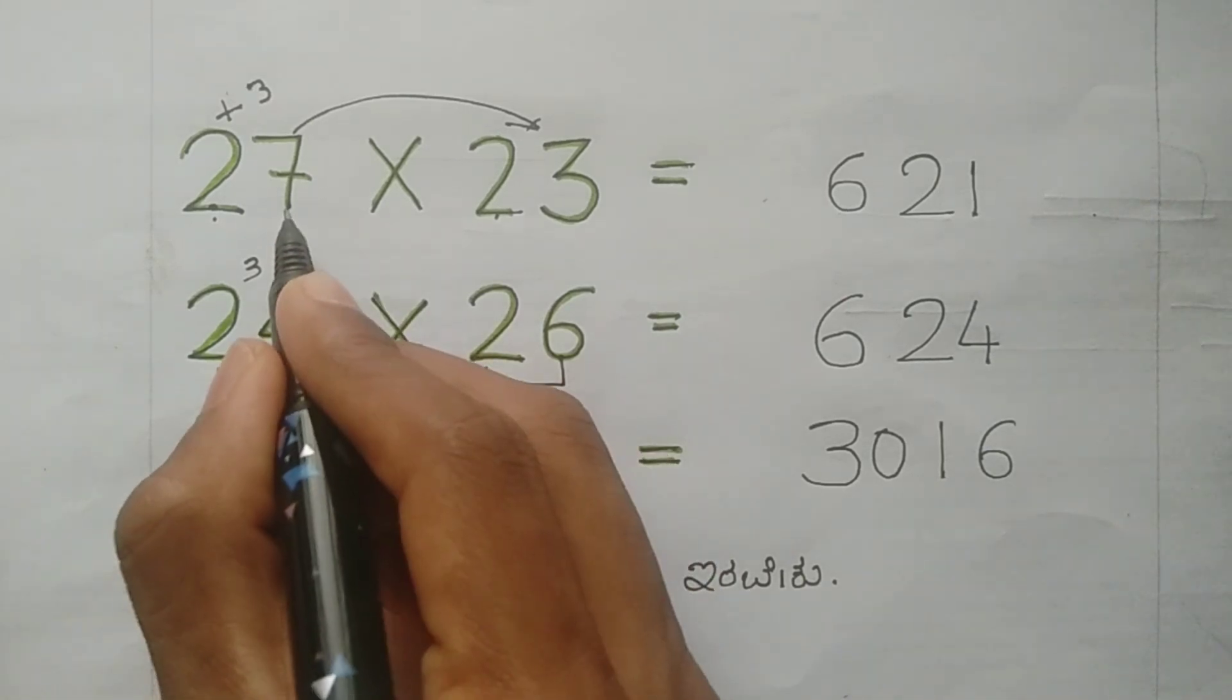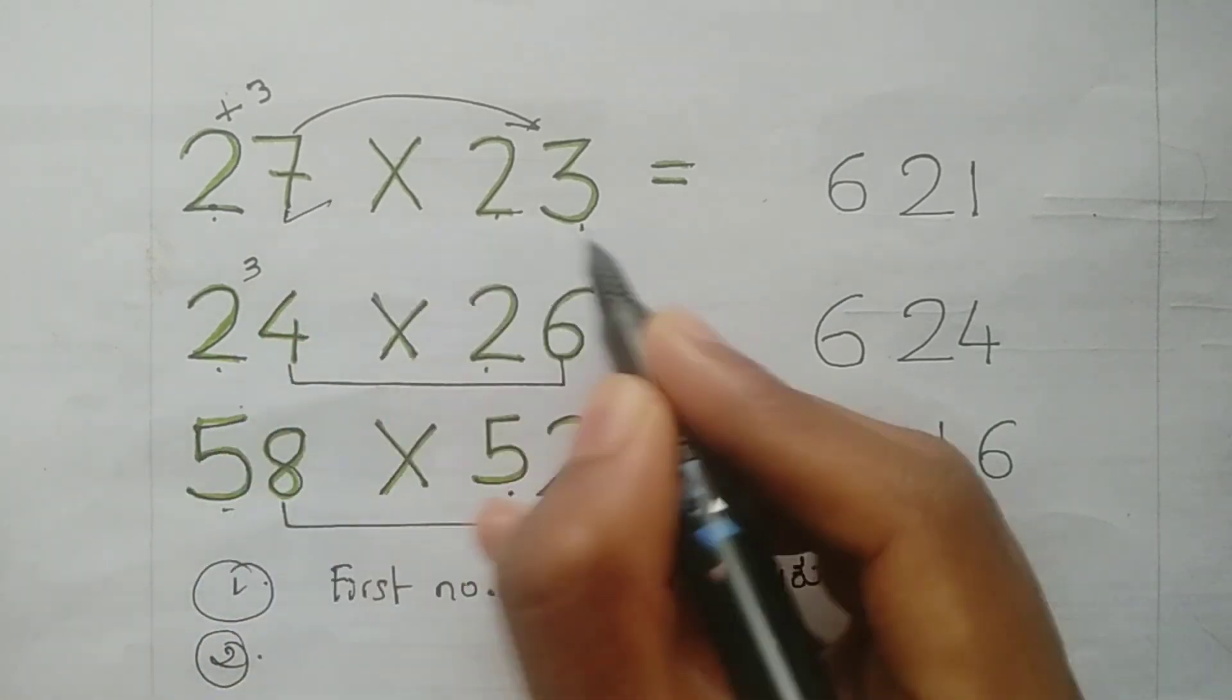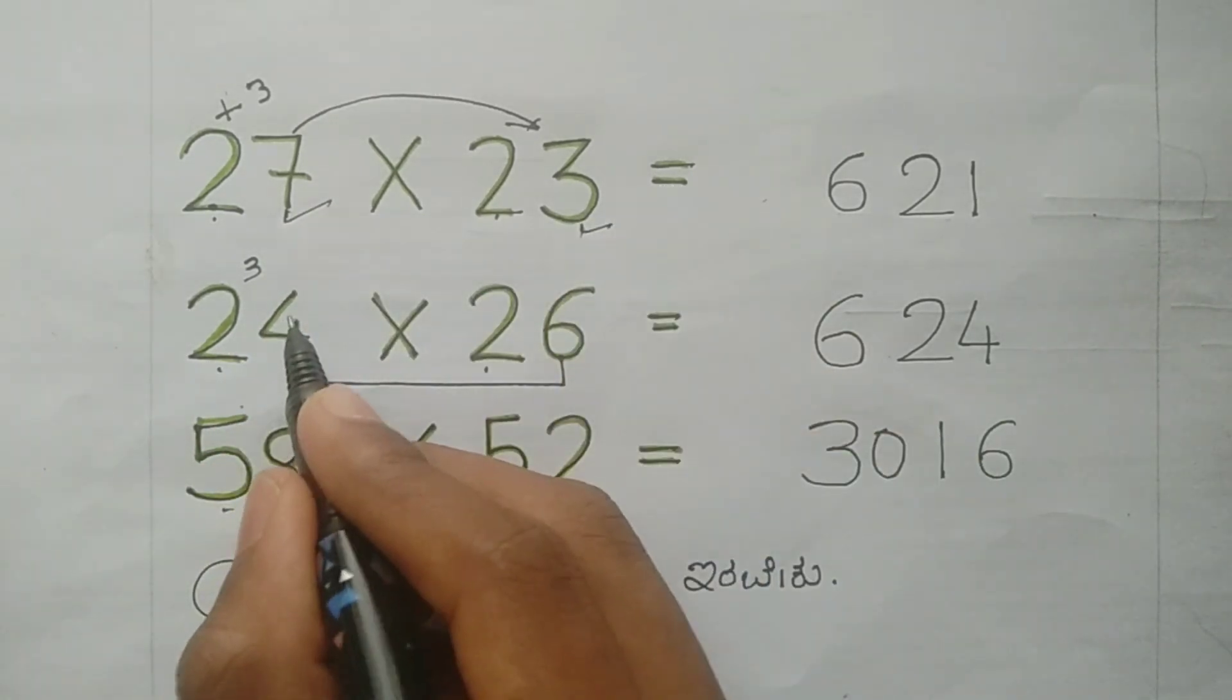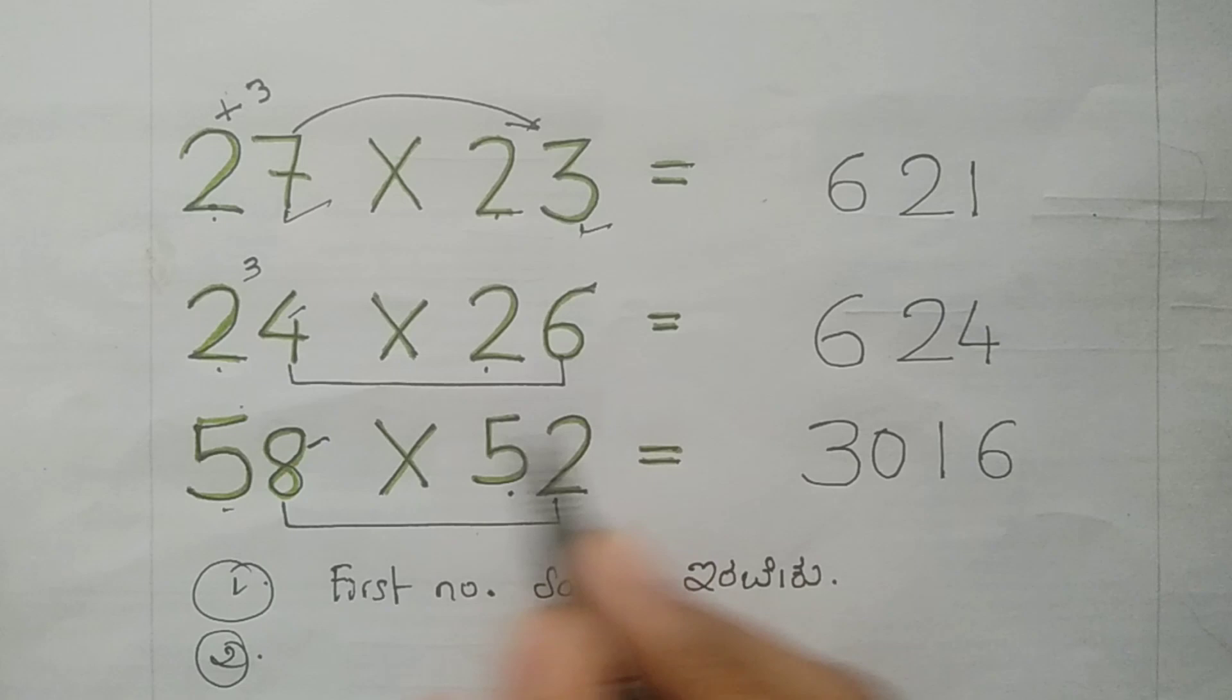Second number: 7 and 3, add them, you get 10. 4 and 6, add them, you get 10. 8 and 2, add them, you get 10. So always the summation should be 10. If not 10, then you cannot do this method.